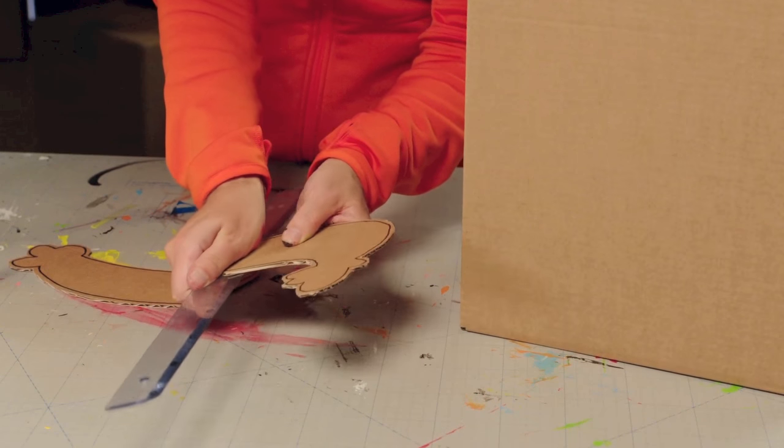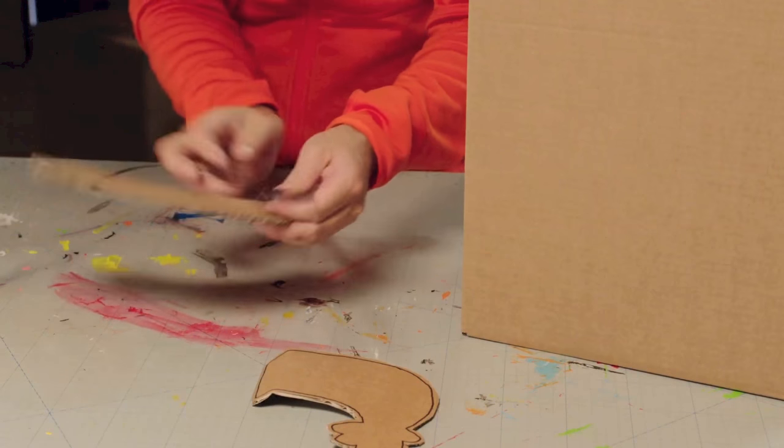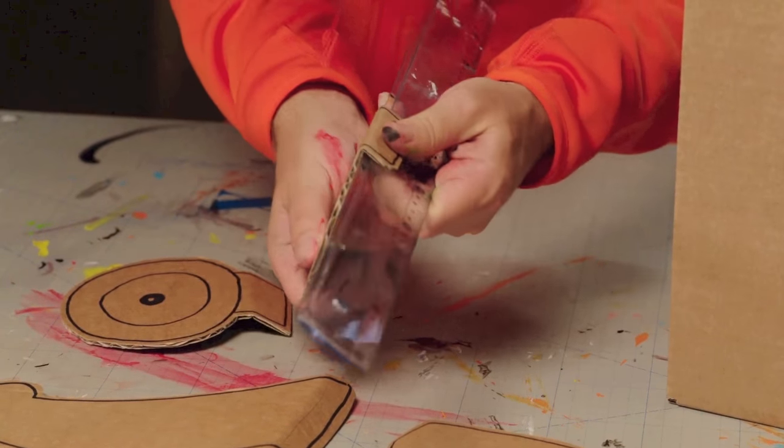First, we need some flaps for the glue. It's best to fold these around the ruler to get a nice straight line. Like this. Done.